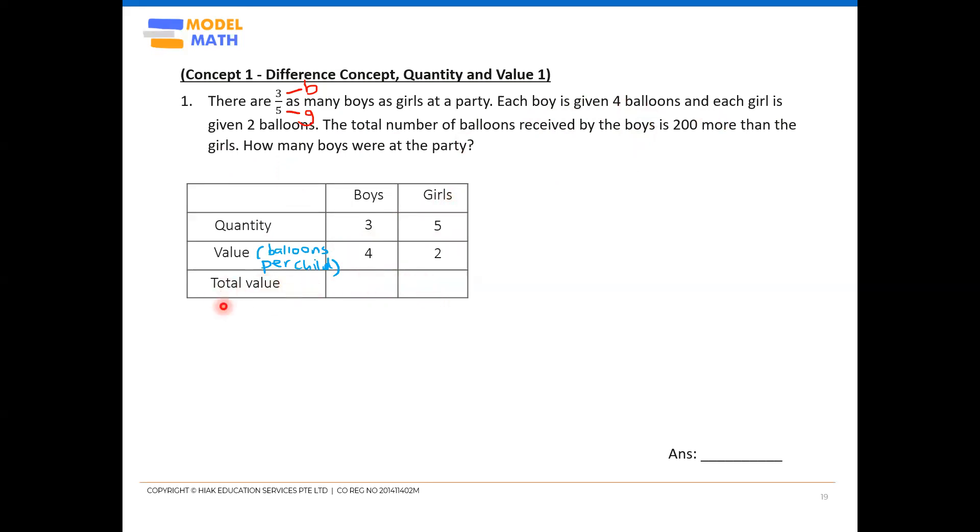Total value naturally means the total balloons that this group of boys is holding, total balloons that this group of girls is holding. I have three boys here, but each boy holds four balloons. So simply 3 times 4 to get 12 balloons for all the three boys. Your 3 times 4, you can write it straight in here. You can do 3 times 4 equals 12 in here. Let's move on to the girls also. Each girl is two balloons. But since I have five girls, so 5 times 2, that will be 10 balloons for one group of girls.